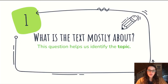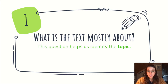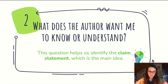Let's talk about these questions individually. The first one — what is the text mostly about? — actually really helps us identify the topic, not the main idea. Sometimes it can help us figure out the main idea, but usually it just gives us the general subject. Once we've identified that, we can ask: what does the author want me to know or understand? This question helps us identify the claim statement, and the claim statement is the main idea. Whatever the author wants me to walk away knowing is the main idea or claim.